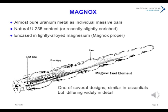The original type was Magnox, essentially a rod of uranium metal with traces of iron and aluminium to improve the grain structure — slightly more than an inch in diameter and around 40 inches long. This is encased in a sheath of magnesium alloy. Designs vary, but generally feature spacing fins and helical grooves to promote thermal contact with the carbon dioxide reactor coolant.